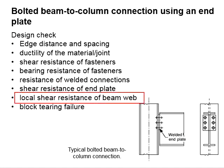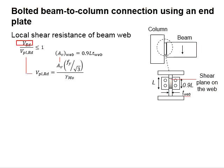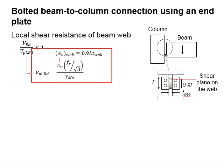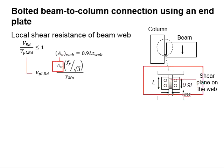Next, we check the local shear resistance of the beam web. The shear load must be less than the resistance provided by the beam web, so that the ratio is less than 1.0. The local shear resistance is determined from the equation using the effective shear area of the web, the specified yield strength of the web, and a factor of safety gamma M0 equal to 1.0.